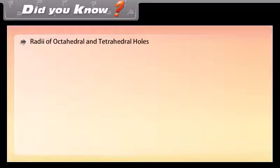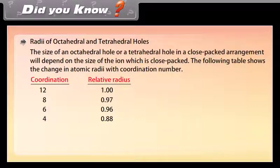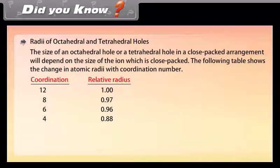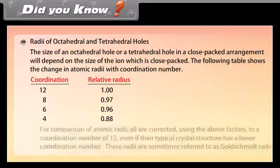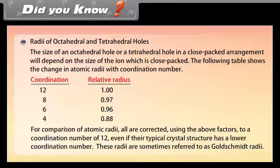The size of an octahedral hole or tetrahedral hole in a close packed arrangement depends on the size of the ions which are close packed. The following table shows the change in atomic radii with coordination number. For comparison, all atomic radii are corrected to a coordination number of 12 using the given factors, even if their typical crystal structure has a lower coordination number. These radii are sometimes referred to as Goldschmidt radii.